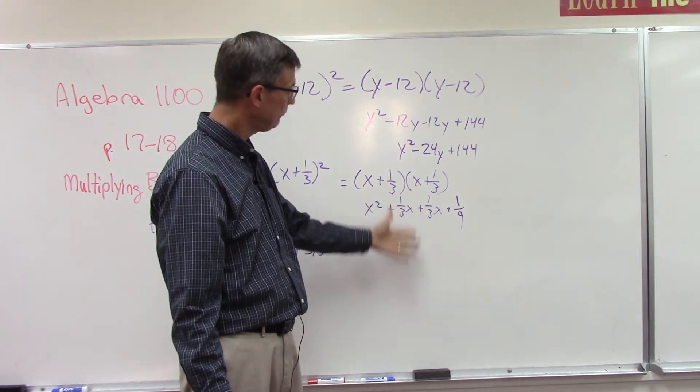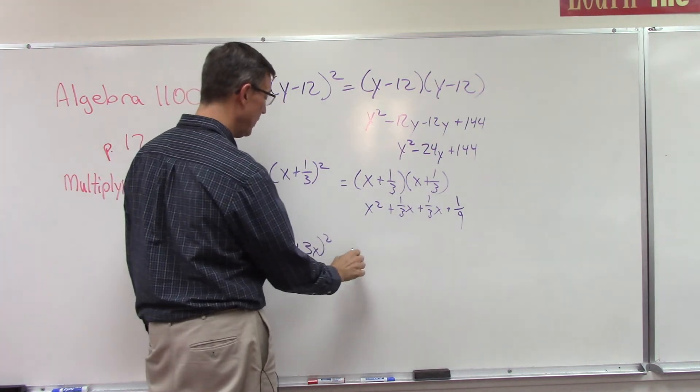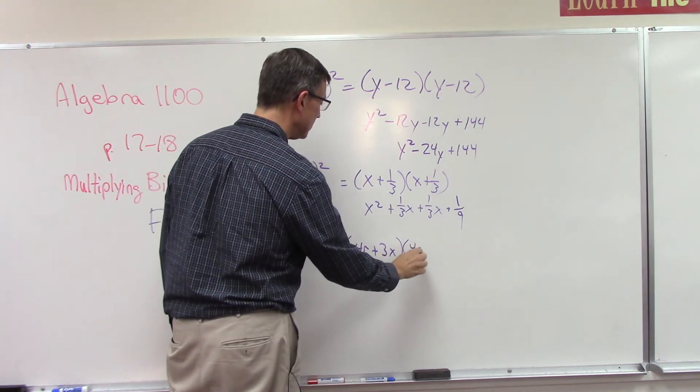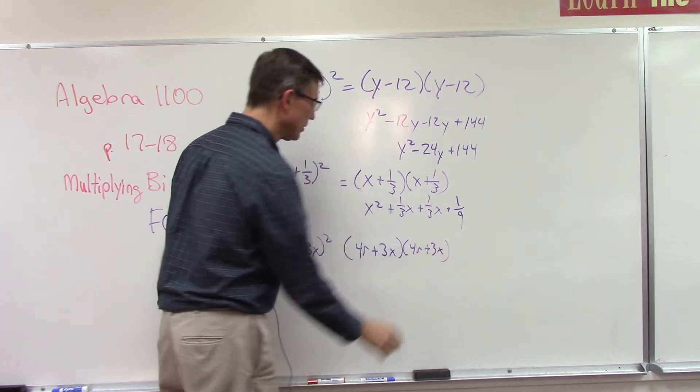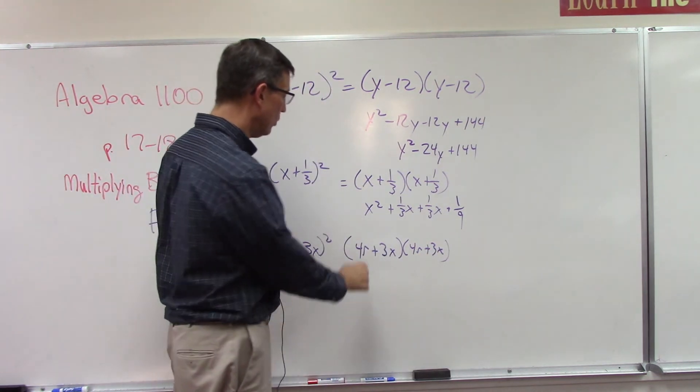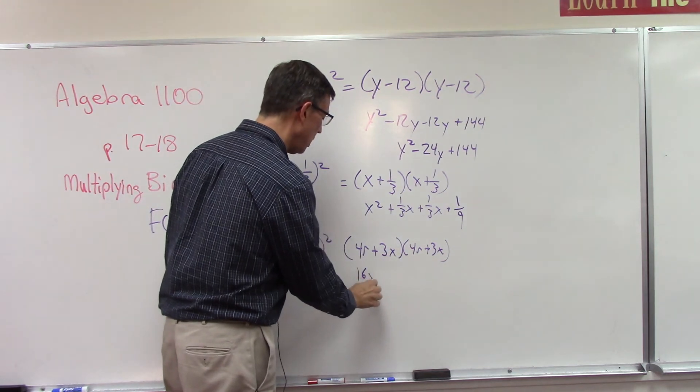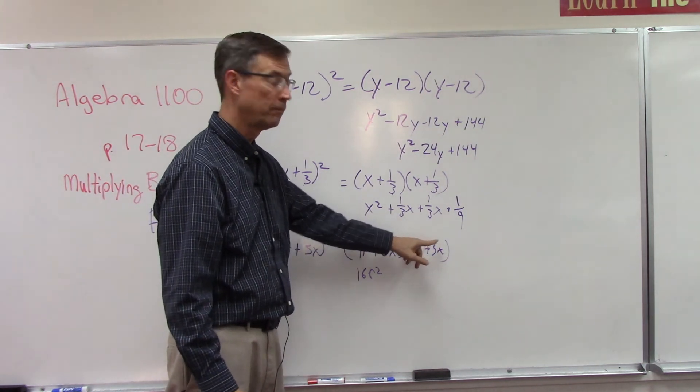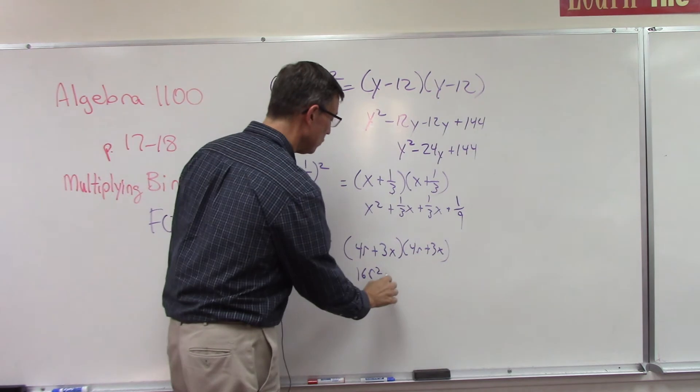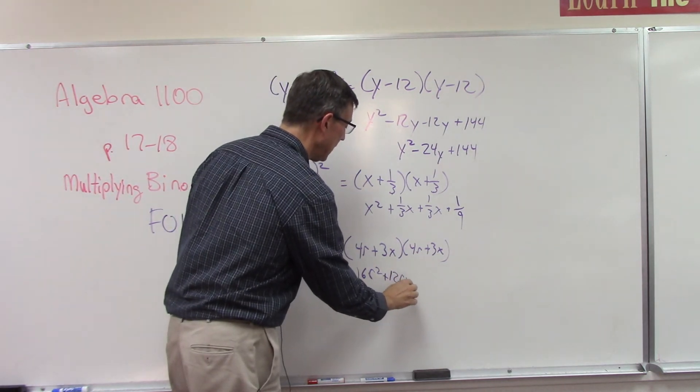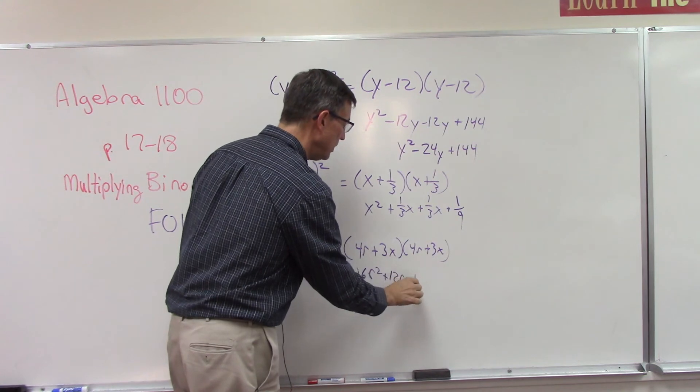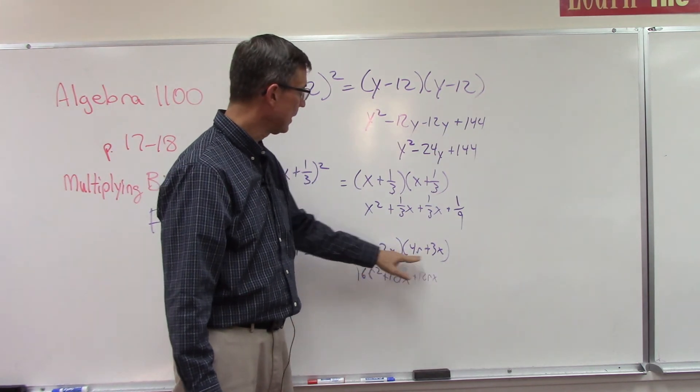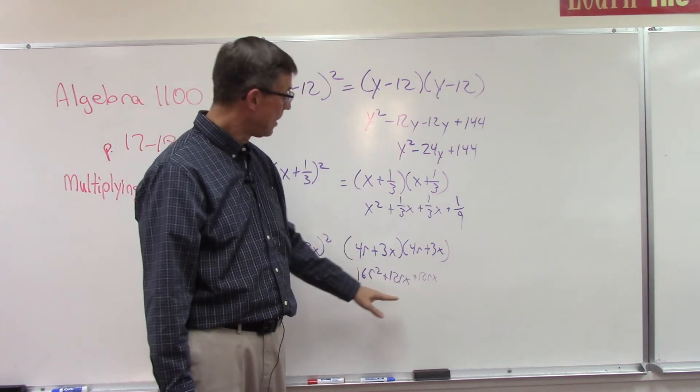This one has two variables. Four r plus three x—we're going to write it twice. I always think this is the easiest way to do it. Don't try to do these in your head. Four r times four r is 16r². Now let's do the outer: four r times three x, so we'll do the number part together, get 12rx. We get the same thing here in the middle, another 12rx. And then what's the last term? Three times three and x times x. I'm going to let you finish that.